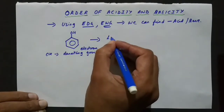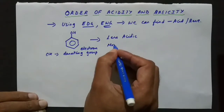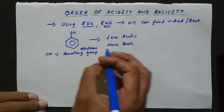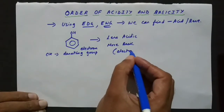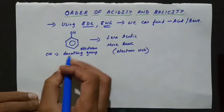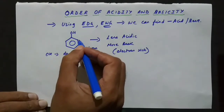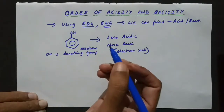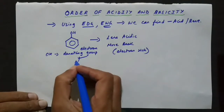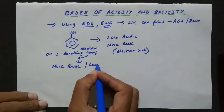So this compound will be less acidic and more basic — that is the basic concept to understand. Because it is electron-rich, it is more basic. More electrons means hydrogen will be strongly attracted by those electrons, so H is not free to move as H⁺. In general, electron-donating groups make the compound more basic and less acidic.